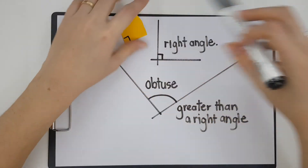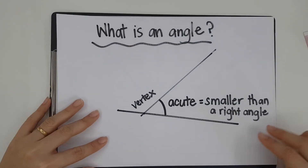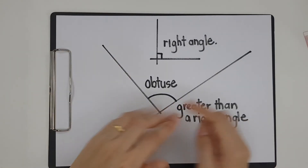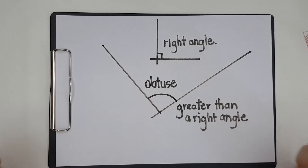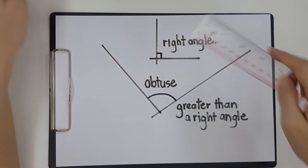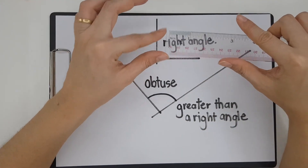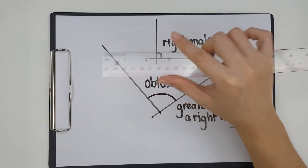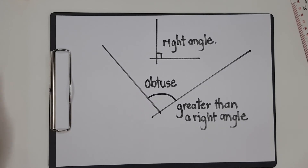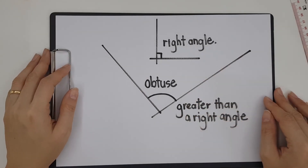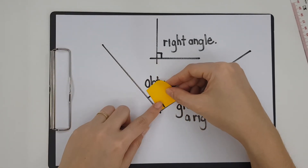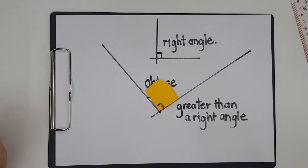I hope you understand the three different types of angles. First, we have the acute angle, which is smaller than 90 degrees. Then we have the obtuse, which is bigger than 90 degrees. And we have the right angle — we can use a paper right angle, we can also use the corner of our rulers, the corner of a box, or the corner of our book, all of which are right angles. Some people can just look and know it's bigger than a right angle. These are the three angles that we learned.